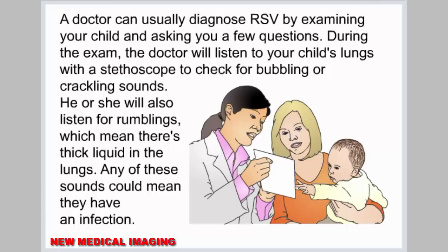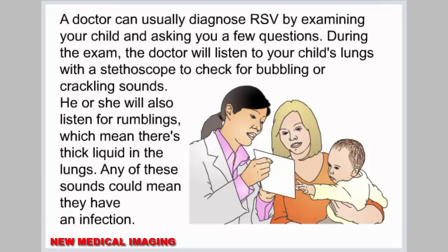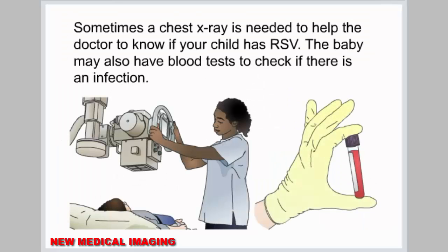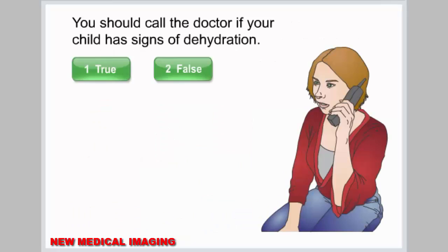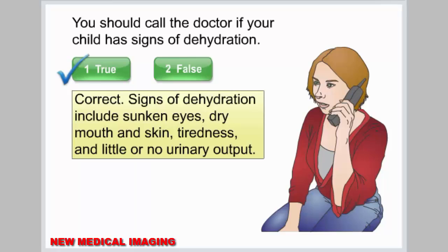A doctor can usually diagnose RSV by examining your child and asking you a few questions. During the exam, the doctor will listen to your child's lungs with a stethoscope to check for bubbling, crackling, or rumbling sounds, which could mean there's thick liquid in the lungs indicating an infection. Sometimes a chest X-ray is needed, and the baby may also have blood tests to check for infection. You should call the doctor if your child has signs of dehydration — true or false. Correct.